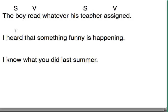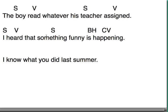Here's another one: I heard that something funny is happening. 'I' is our subject. What did I do? I heard. There's that word 'that,' and so 'that' tells us that there's another subject — 'something funny' — and 'is happening.' There's a subject and a verb, isn't it? So 'that something funny is happening' — there's another subject-verb in that same sentence. There are two pairs. Remember, subjects always go with verbs: subject, verb, subject, verb.